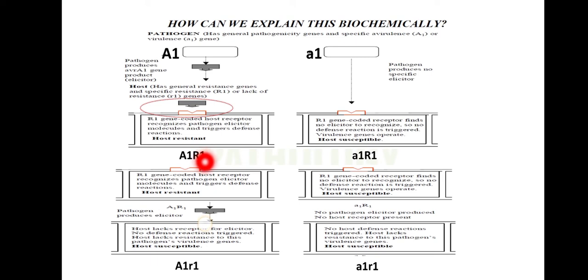The gene for gene concept is given by Flor, but actually these genes are not directly interacting — the actual interaction occurs between the gene products, that is the proteins. So the hypothesis for protein-protein interaction is given by Van der Planck. The gene for gene concept is given by Flor whereas the protein for protein concept is given by Van der Planck.